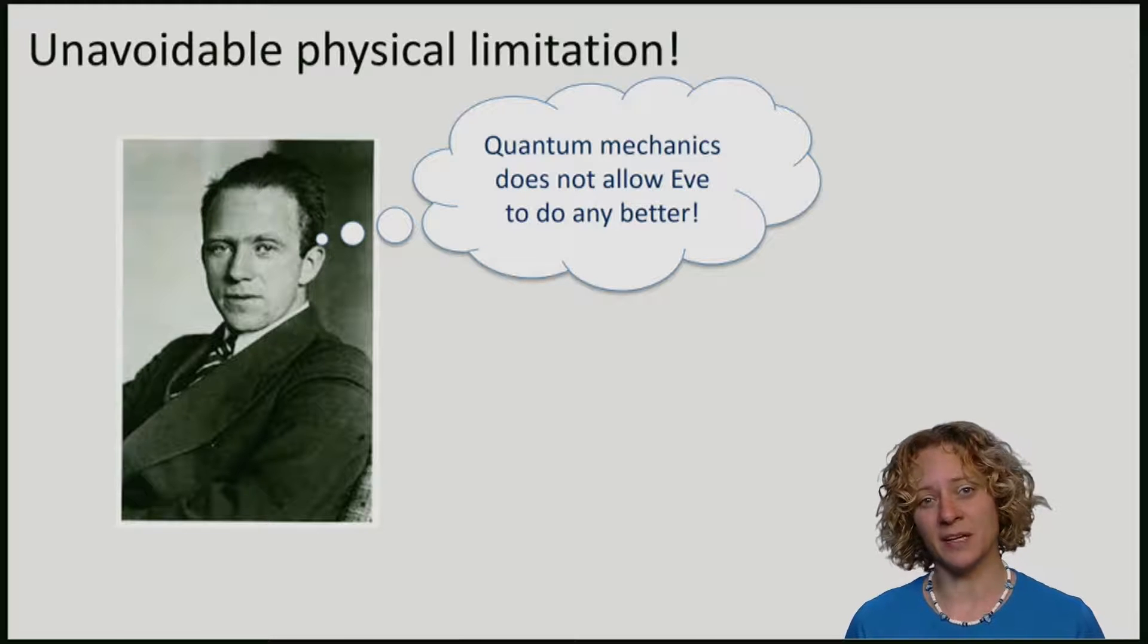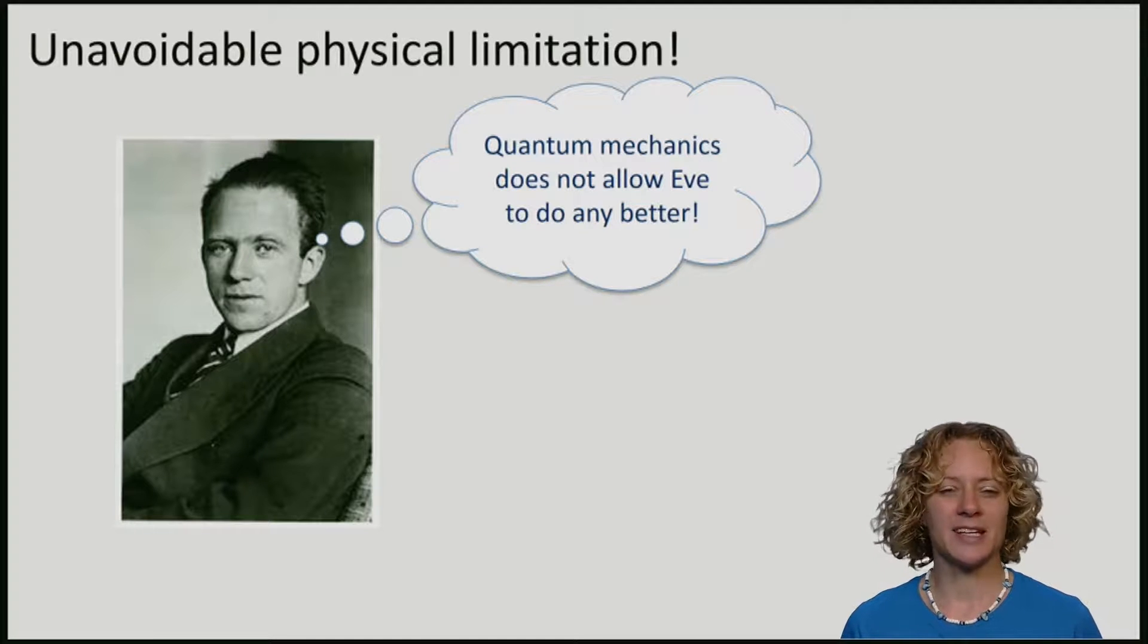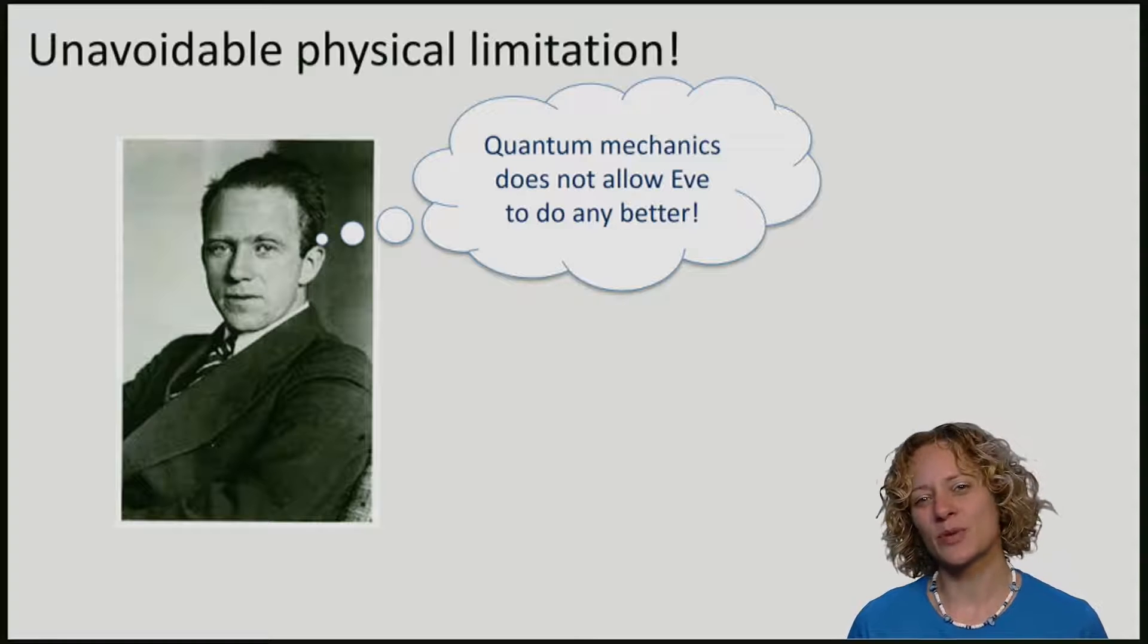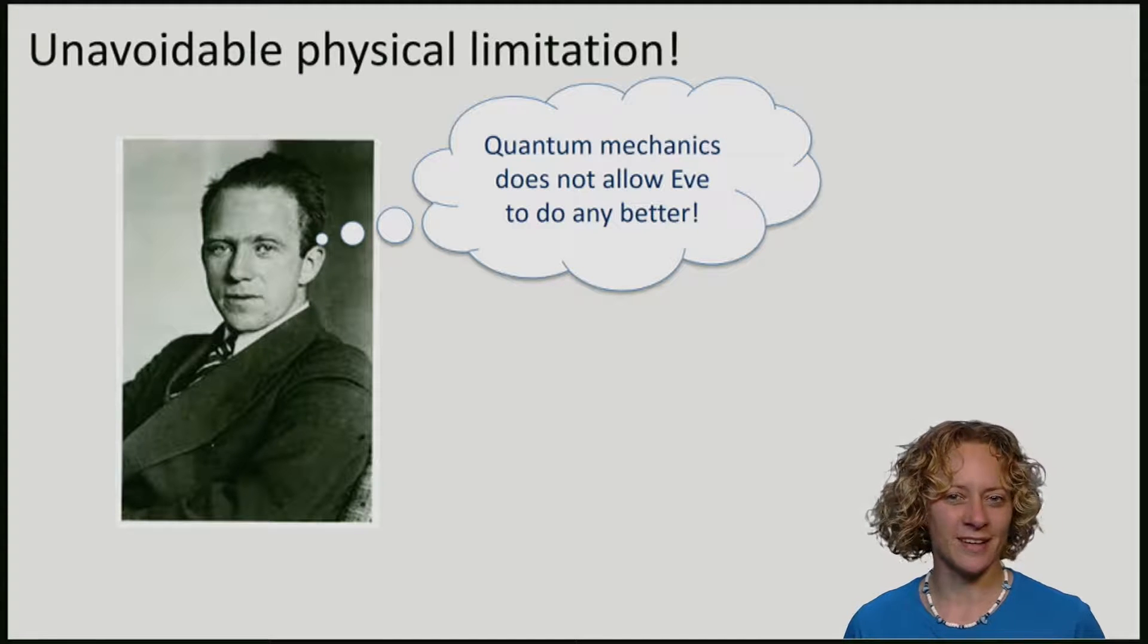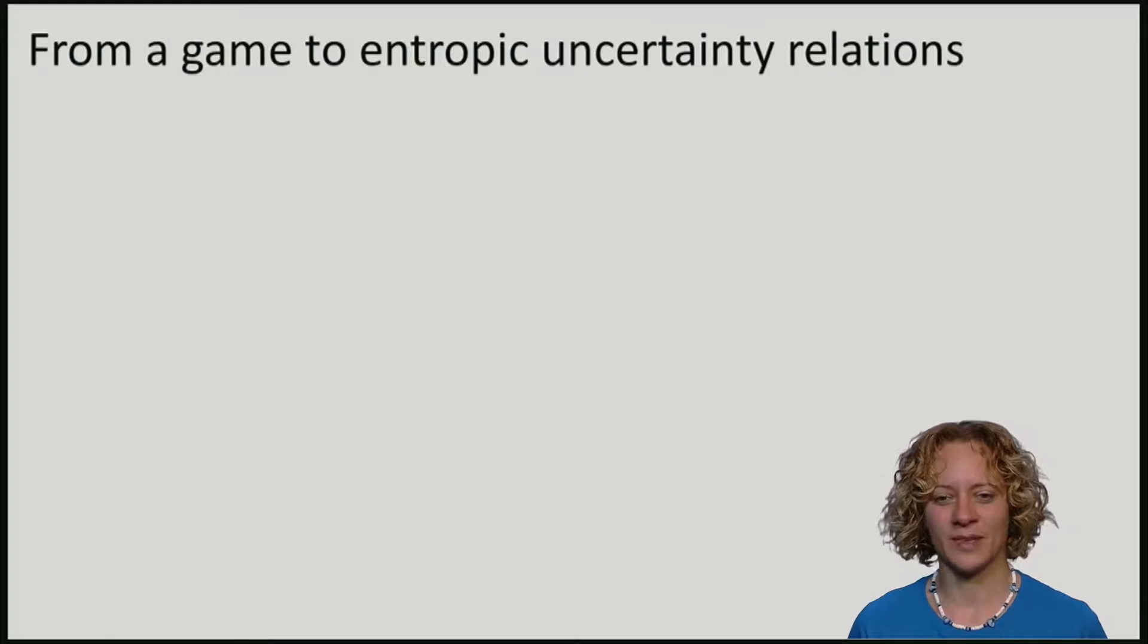We have already seen the min entropy. It will be quite convenient to express this probability of guessing in terms of the min entropy. This gives us what is known as an entropic uncertainty relation.